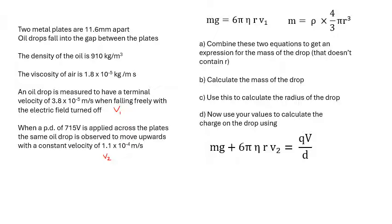If you want to have a go at it by yourself, I'll show you another way of doing it on the next slide, but have a go at this. First of all, combine the two equations above to get an expression for the mass of the drop, so you just eliminate r basically. Then work out the mass of the drop. When you know the mass of the drop, you can work out the radius of the drop. Then when you know the radius and the mass, you can work out the charge on the drop.